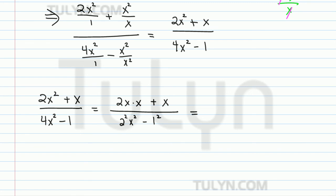So in the numerator, there's an x in common in both terms. So let's factor it out. So this becomes x. And what's left over? 2x plus 1. And then now notice for the denominator, and I'll do this work on the side, this becomes 2x squared minus 1 squared.